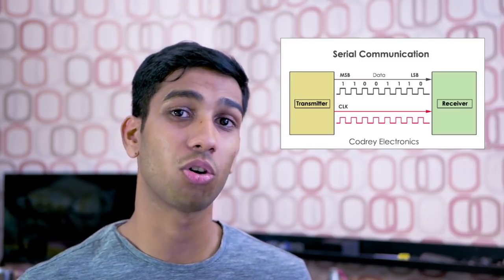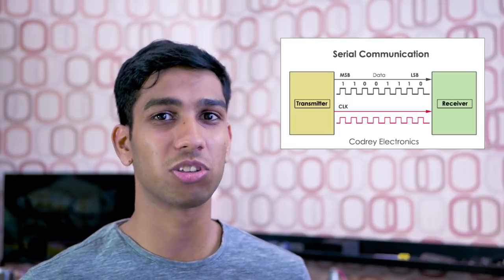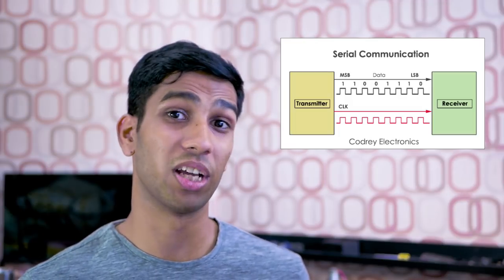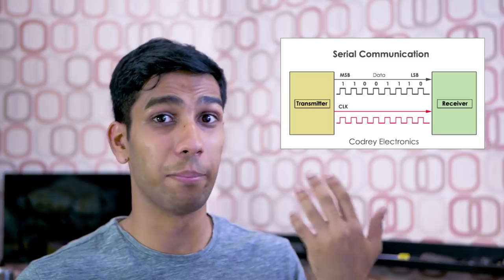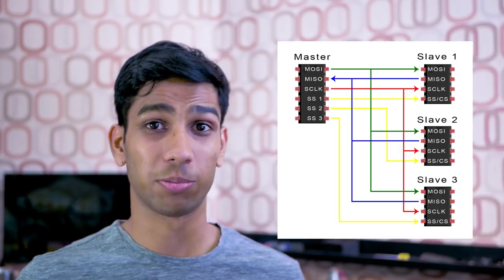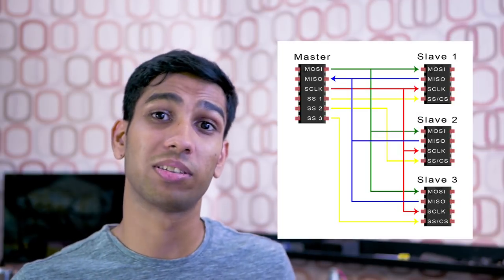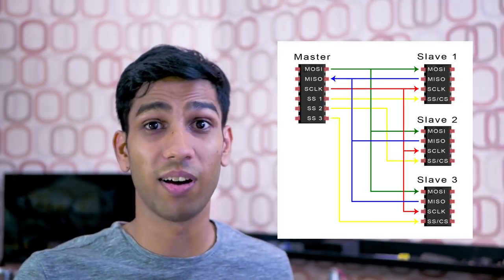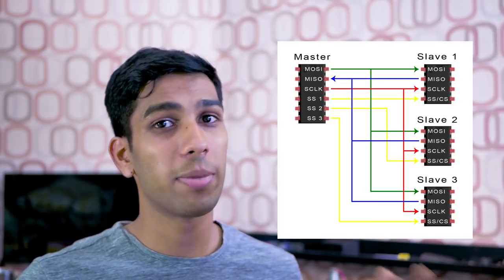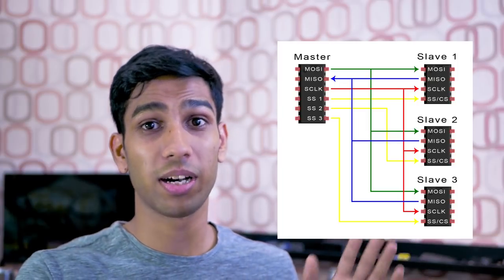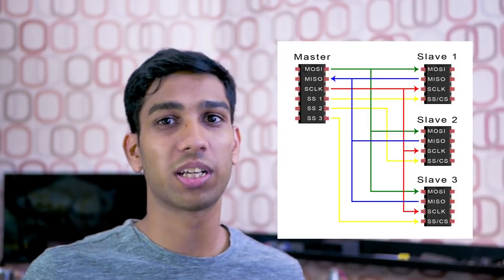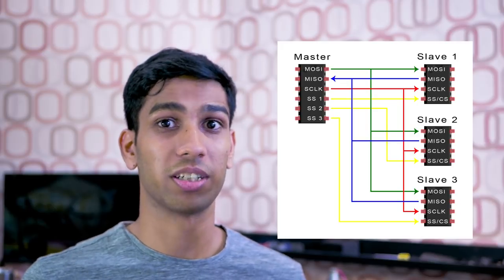Now let's talk about some of the alternatives to I2C. Firstly we have serial communication, which also uses two wires but its biggest drawback is that you can only use it to communicate between two devices — you cannot add more like I2C. Next we have SPI, which is similar to I2C in that you can control multiple devices within one communication loop, but SPI uses three to four wires as a minimum and every additional device you connect to your master requires an additional wire, which can make it very messy for bigger projects.